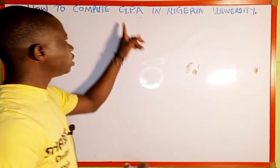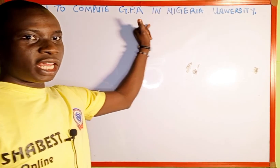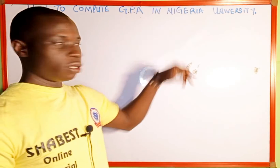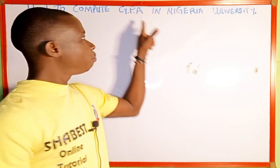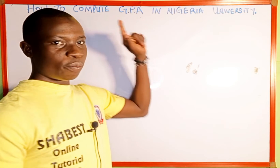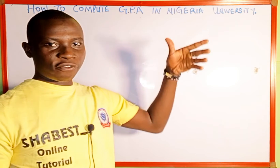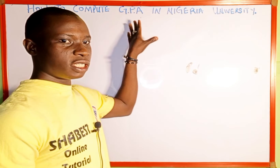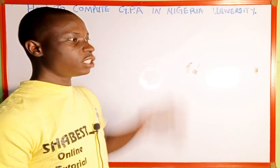So what do we mean by GPA? GPA is an abbreviation: G stands for Grade, P stands for Point, and A stands for Average. So GPA means Grade Point Average.